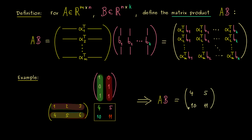So what we see here is that calculating a matrix product is not complicated at all. In general, you just need to know how to calculate the standard inner product, and moreover you need to be a little bit careful that the two matrices fit together. This is the definition, and in the next video we can talk about the properties of this new matrix product. So I hope I see you there, and have a nice day. Bye.